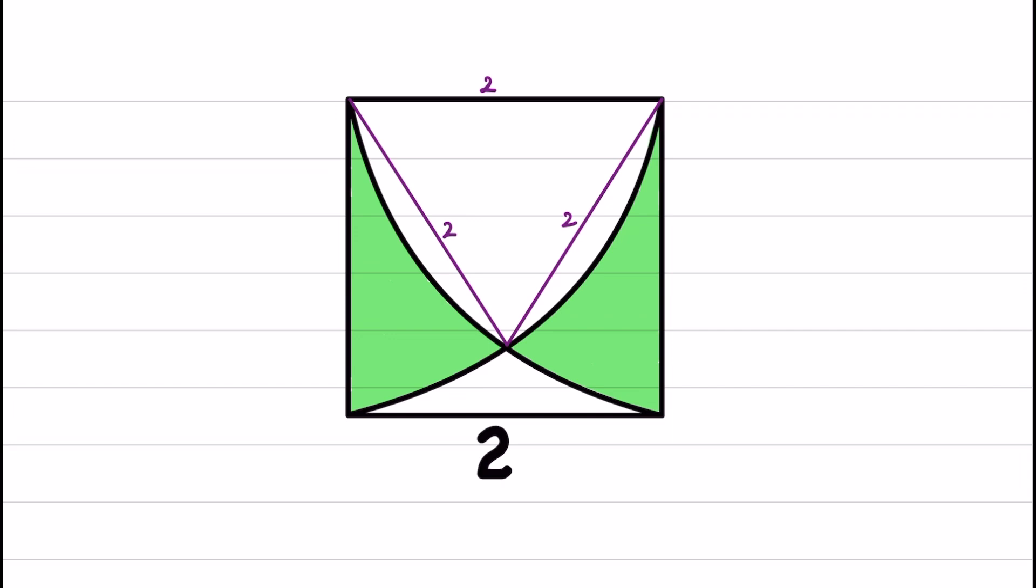Now we've formed an equilateral triangle where all sides are equal. In such a triangle, all angles are 60 degrees.